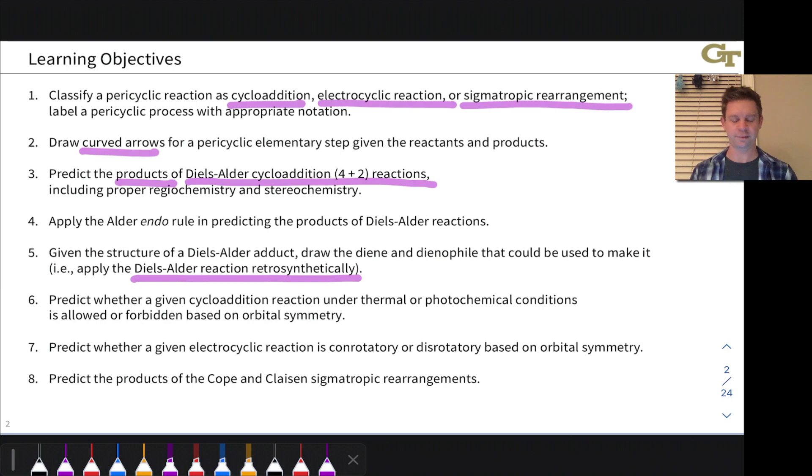Then we'll predict whether a cycloaddition reaction is allowed or forbidden, going beyond just the 4+2 and looking at other possible cycloadditions: 2+2, 6+4, 4+4, etc. There are some rules based on a deep idea about molecular orbitals and orbital symmetry that will help us make this prediction. Likewise, similar orbital symmetry ideas can be applied to electrocyclic reactions to predict their stereochemical outcome, whether they're what we'll call conrotatory or disrotatory.